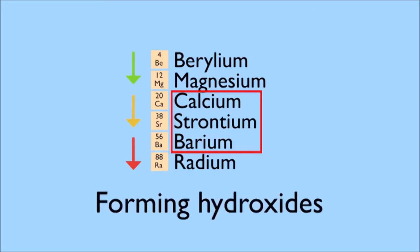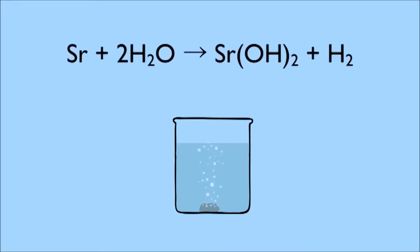To form their hydroxides, though in each case less vigorously than their group one neighbor. If we drop some strontium metal into our beaker of water, it will sink to the bottom. Small bubbles of hydrogen gas then appear on its surface, showing the reaction is taking place.